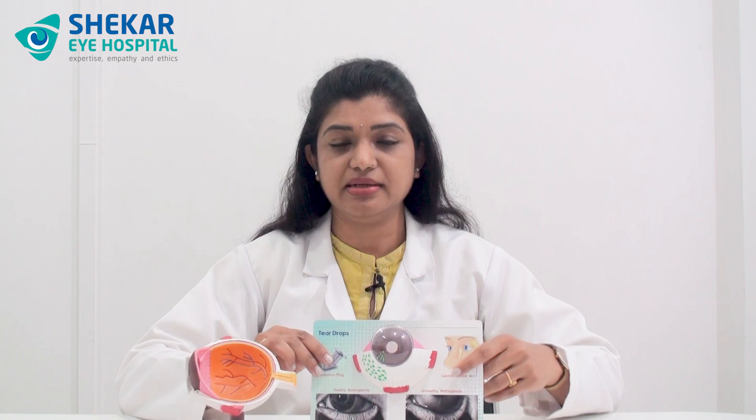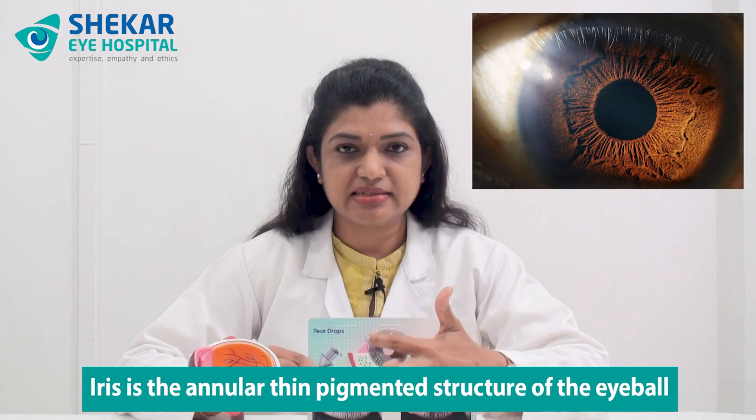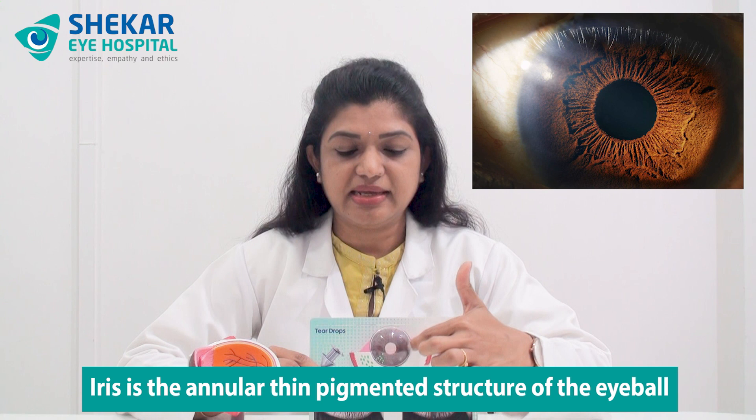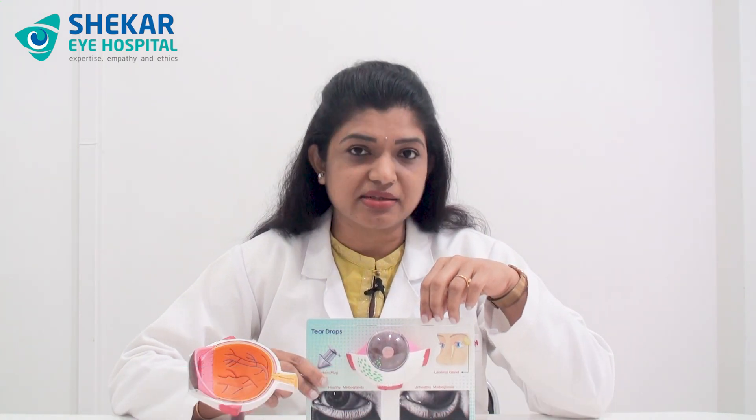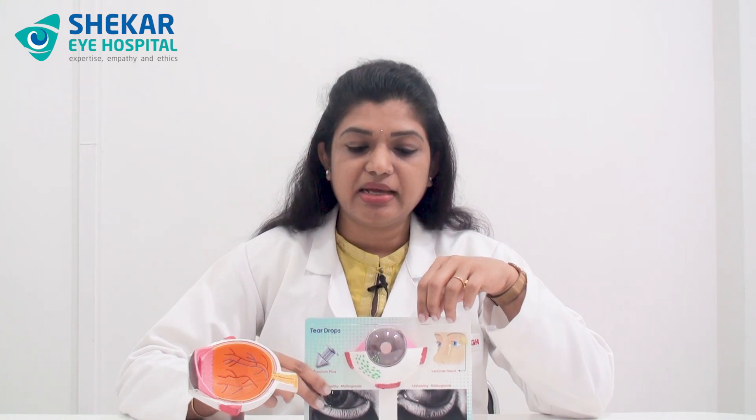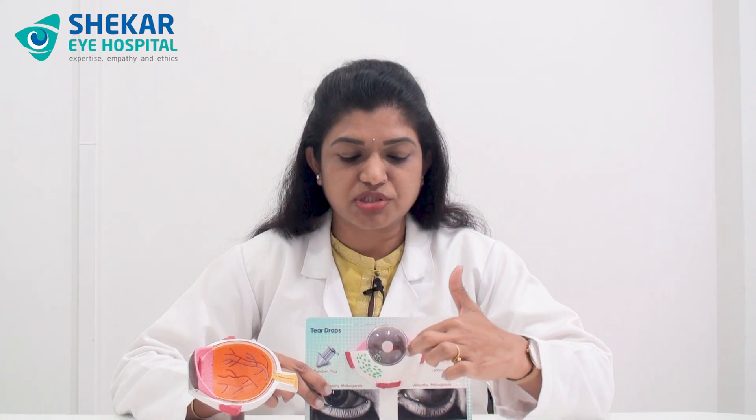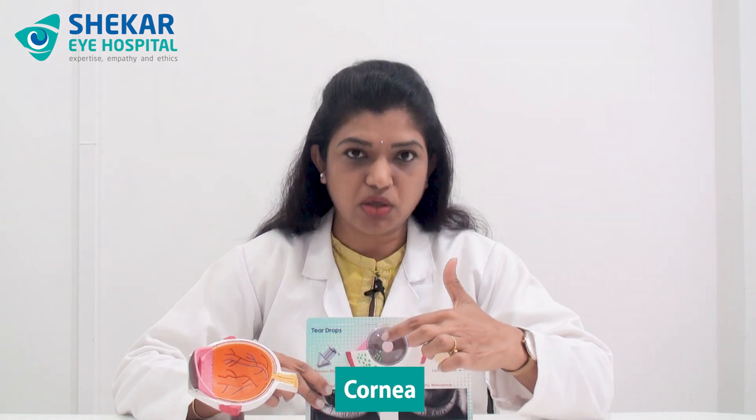Today I'll be talking about the iris. What is iris? If you see in the cross-section of the eye model, iris is the annular thin pigmented structure of the eyeball which determines the color of the eyeball. In the cross-section of the eye, the front transparent portion is called the cornea, and behind that, a thin annular pigmented structure is called the iris.